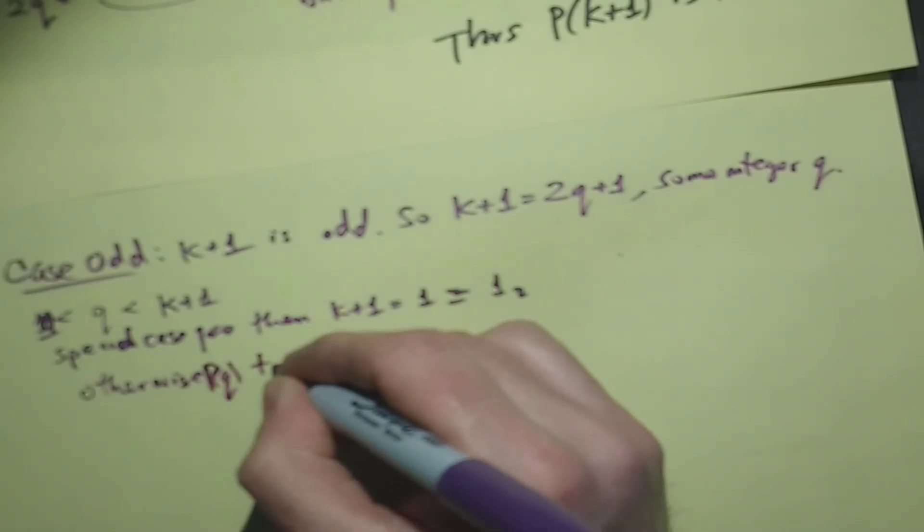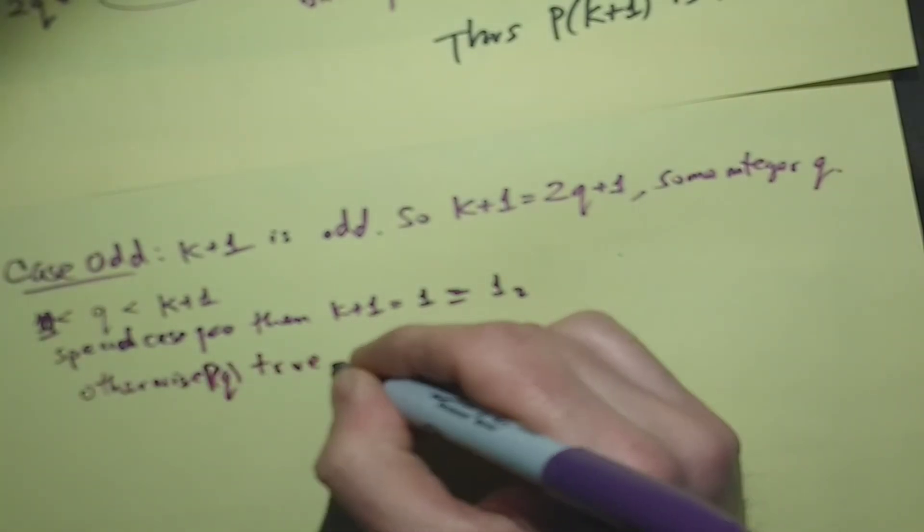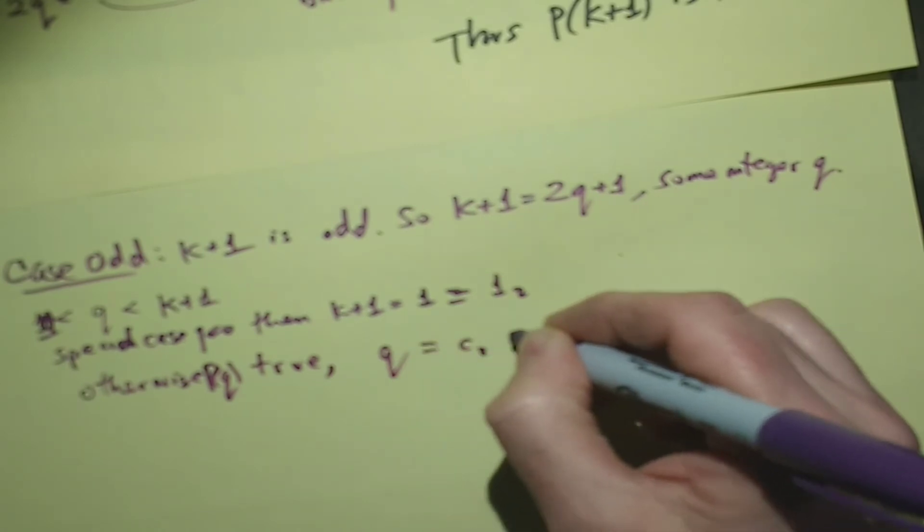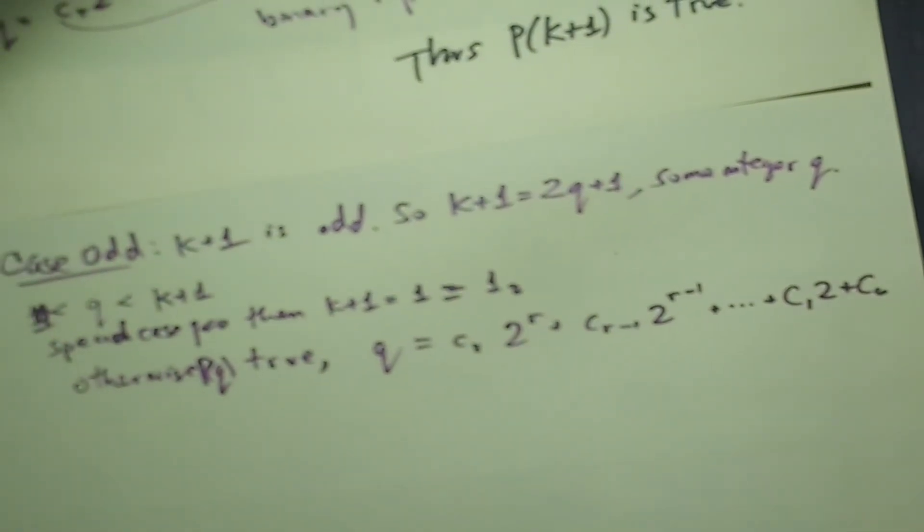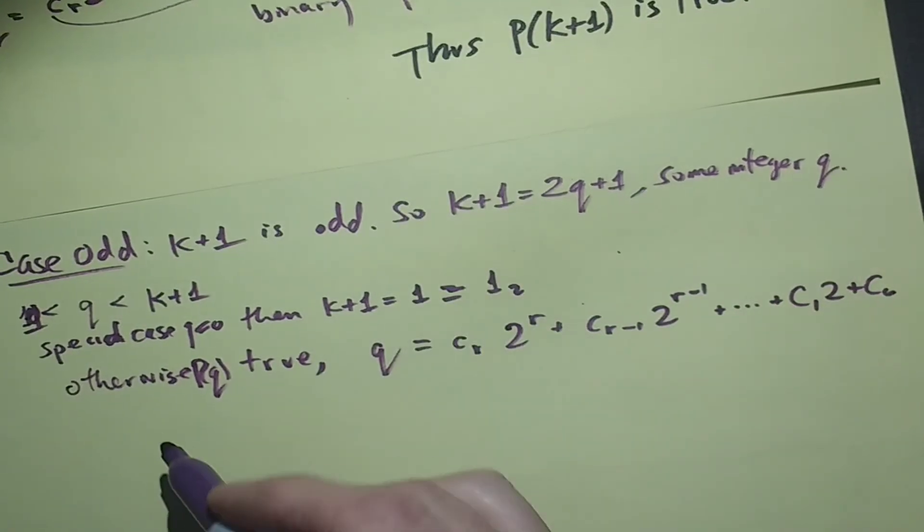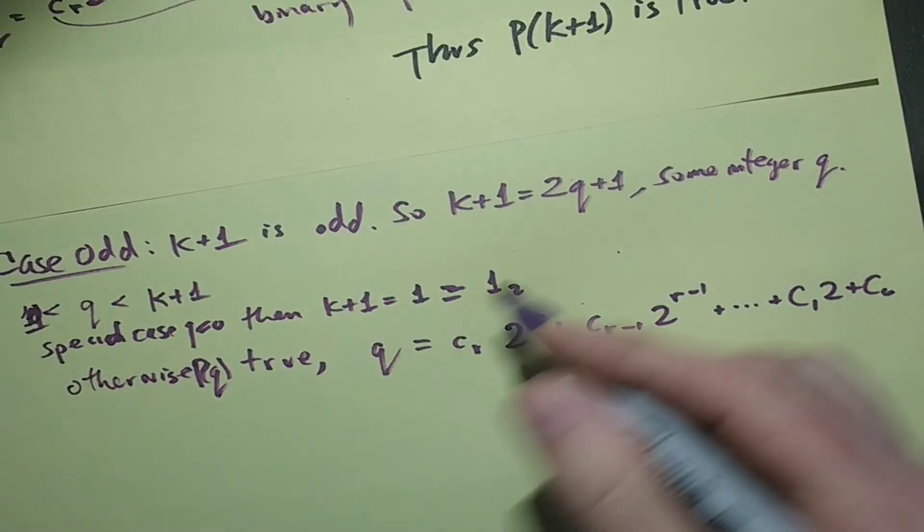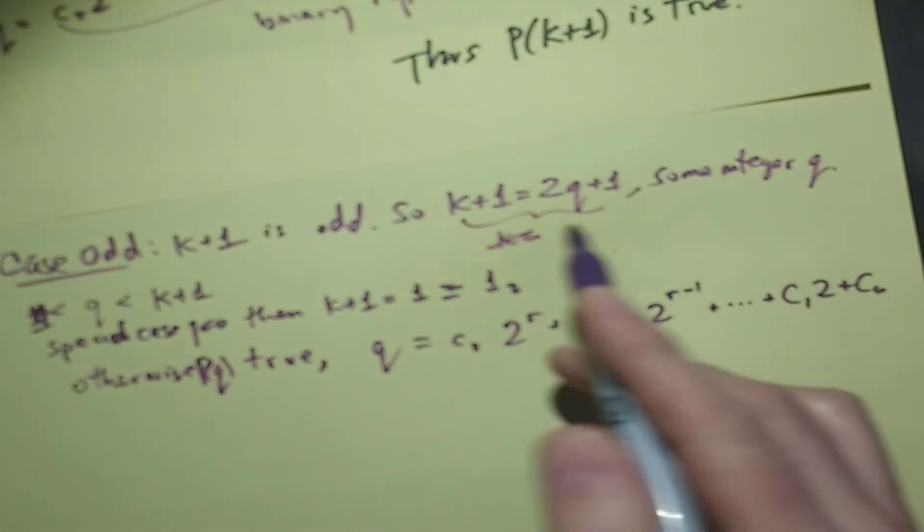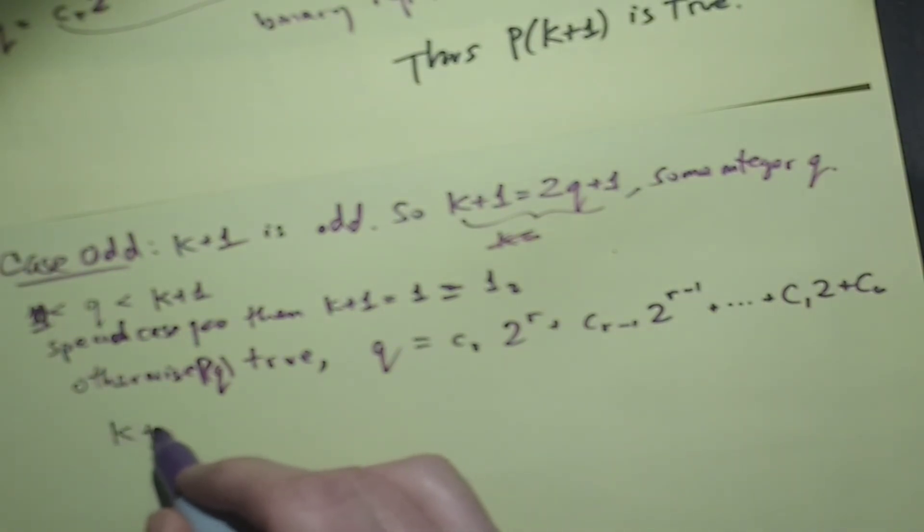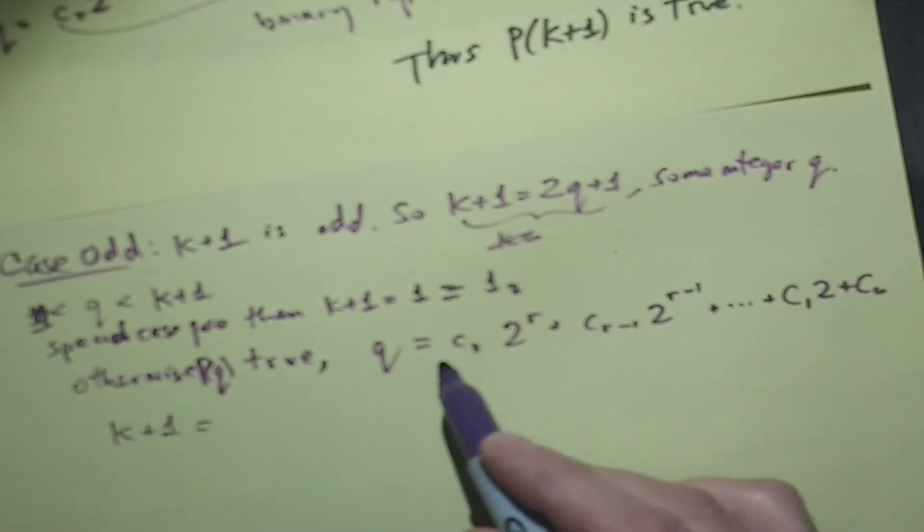But suppose otherwise, otherwise P(q) is true, so q is cr 2 to the r plus cr minus 1, 2 to the r minus 1, all the way down to c1 times 2 plus c0. And with this, let's build up k+1. Actually this just means that k+1 is 2q+1, so what we want to do is write k+1. It's going to be 2 times this whole thing, that shifts everything over, and then we'll add 1.